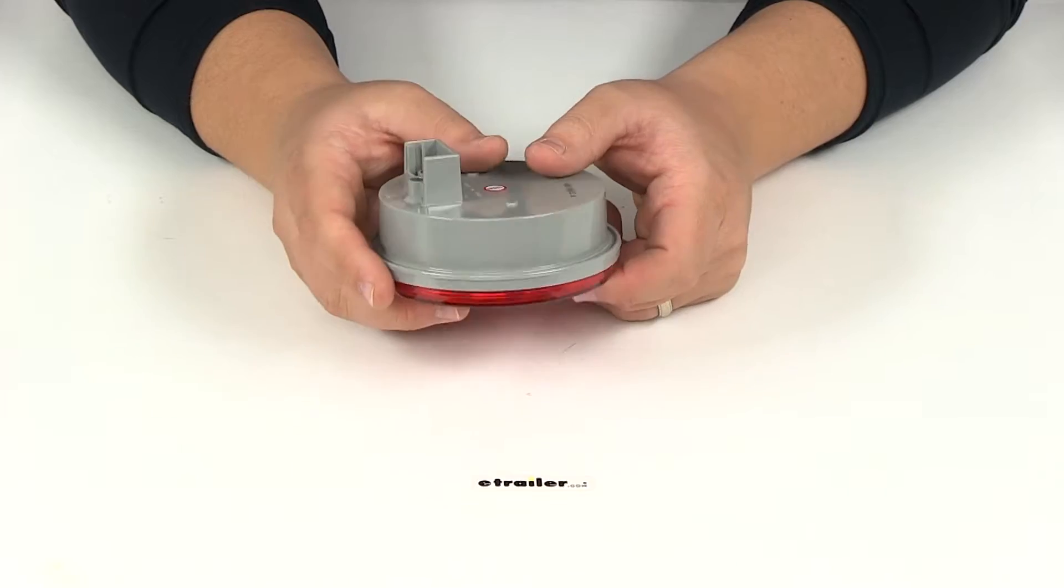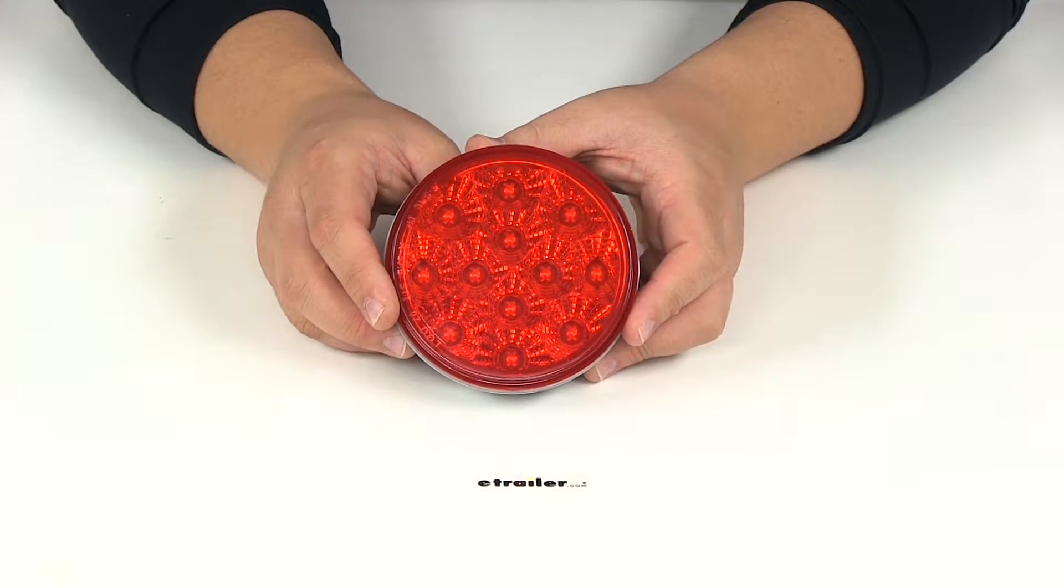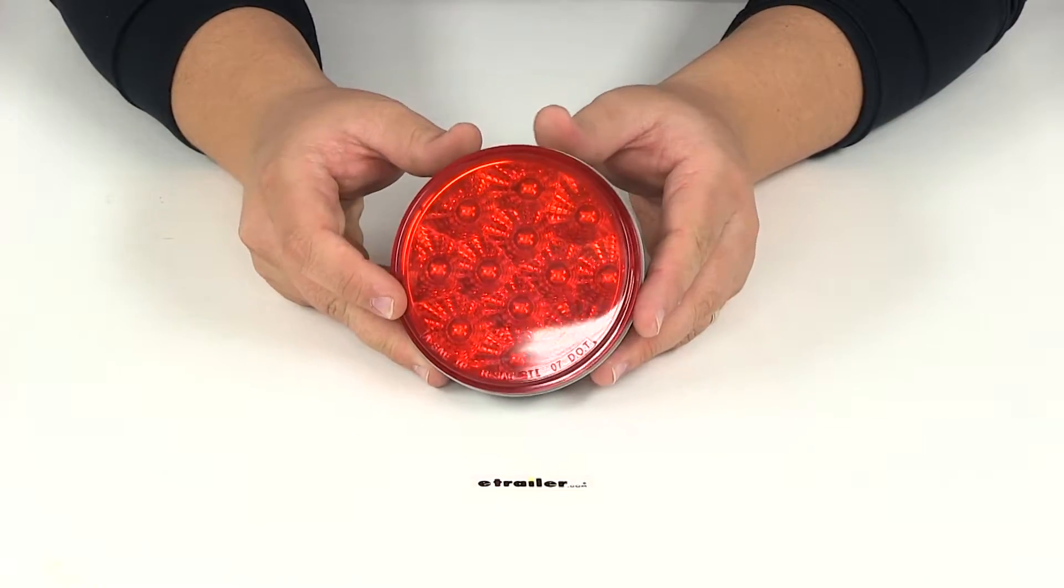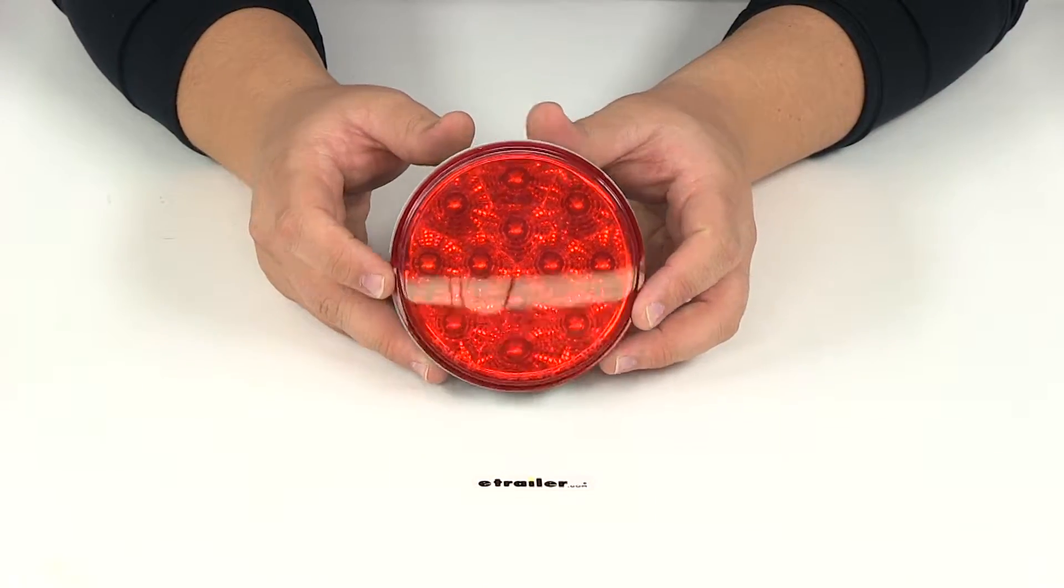This will flush mount with a grommet that's sold separately with part number A45GB. All the things I mentioned that are sold separately can be found right here on our website at eTrailer.com.